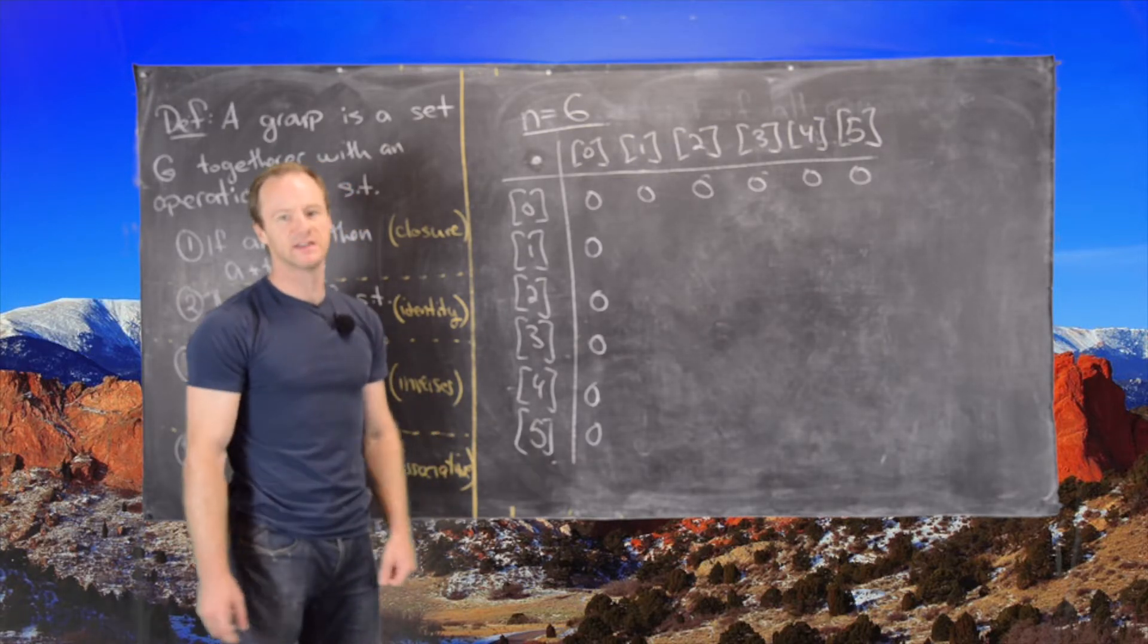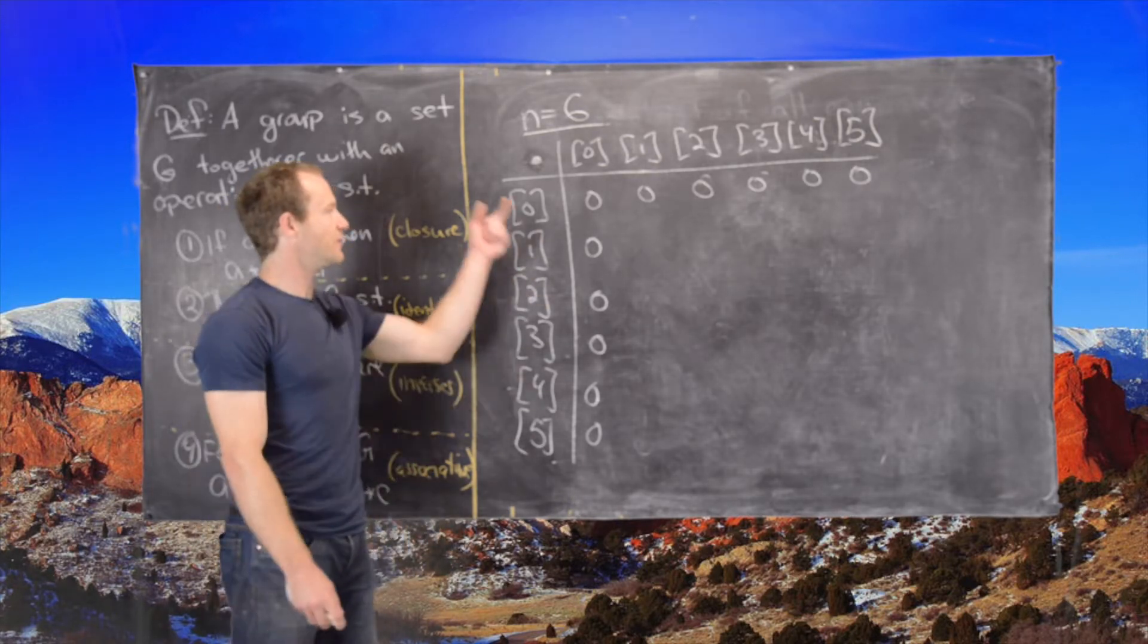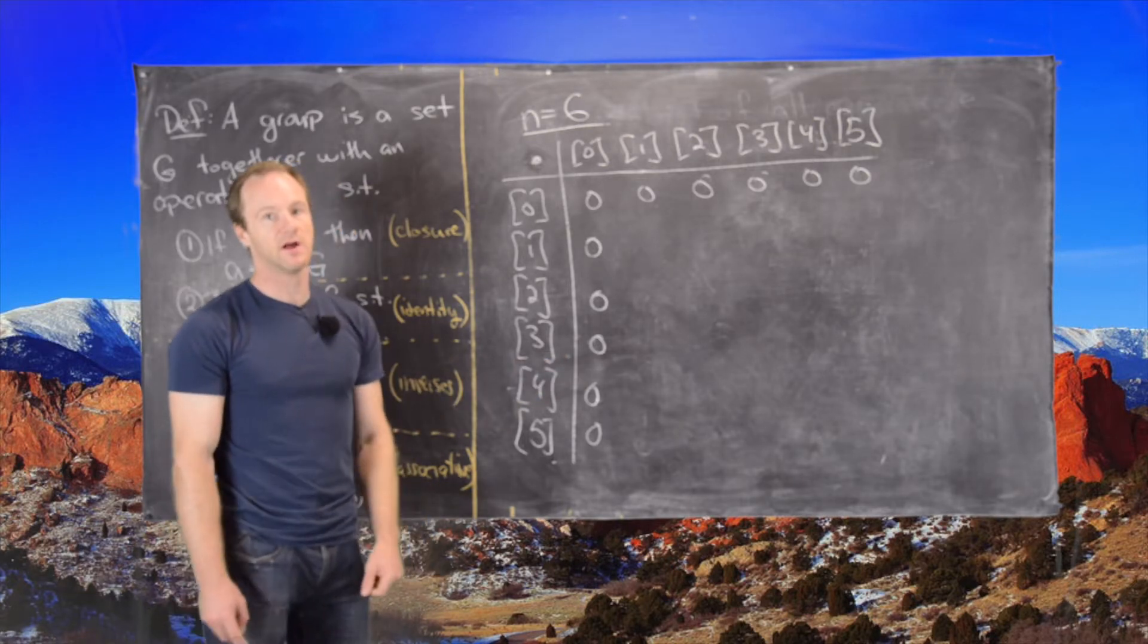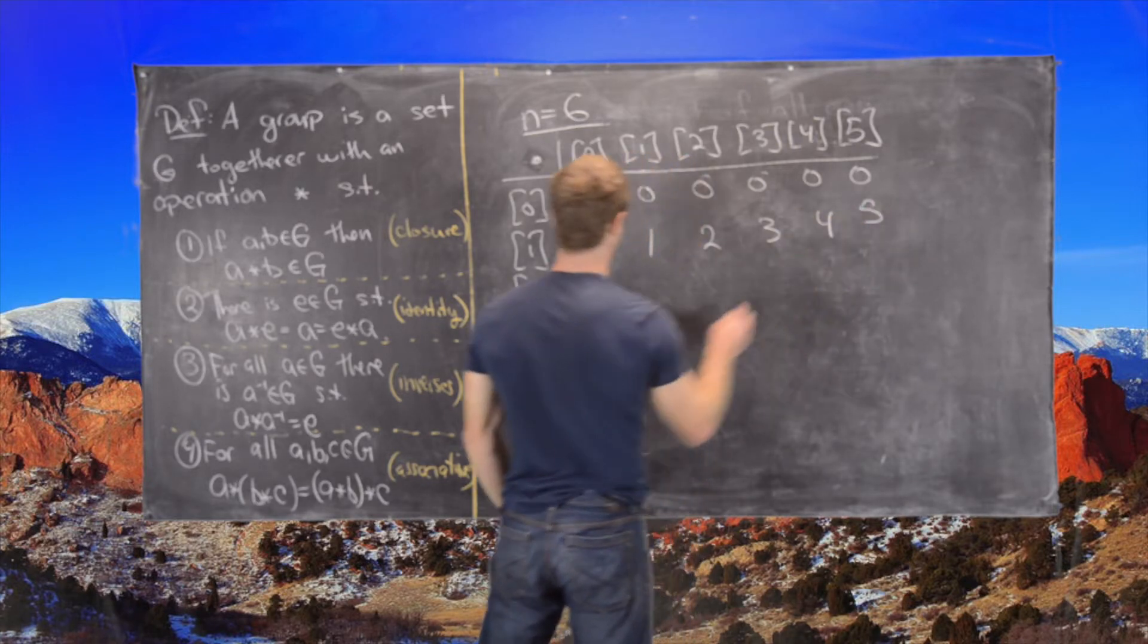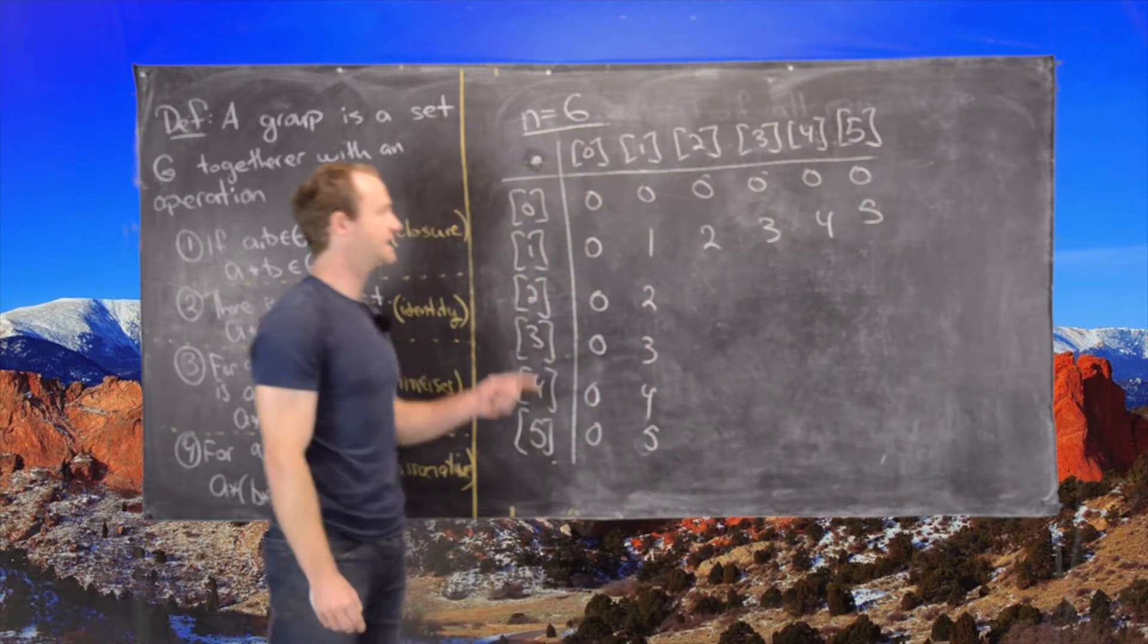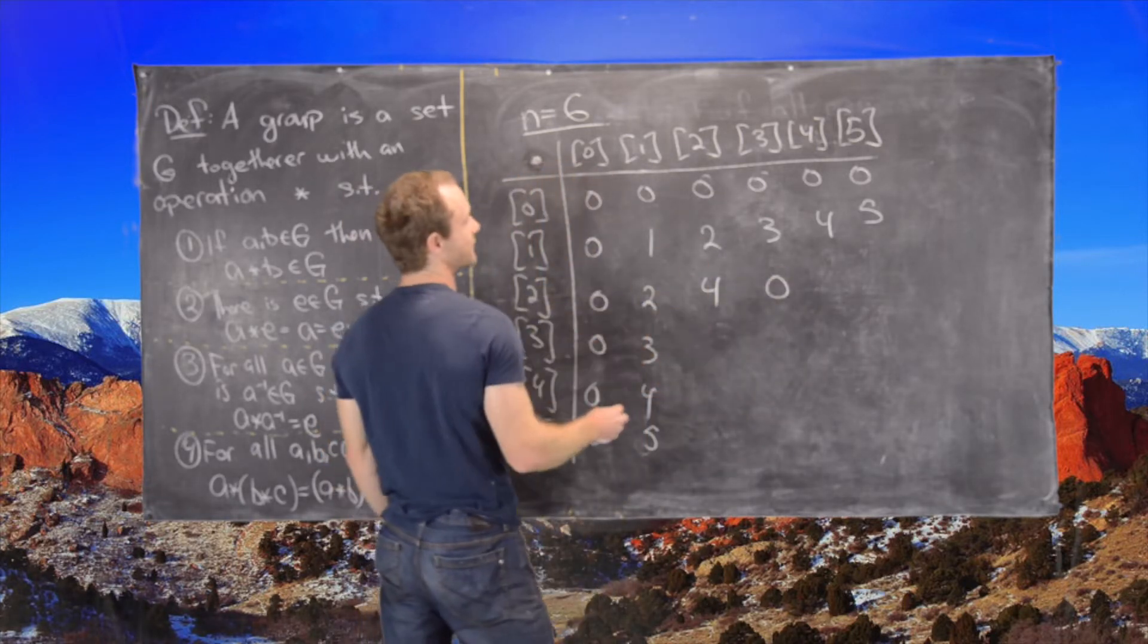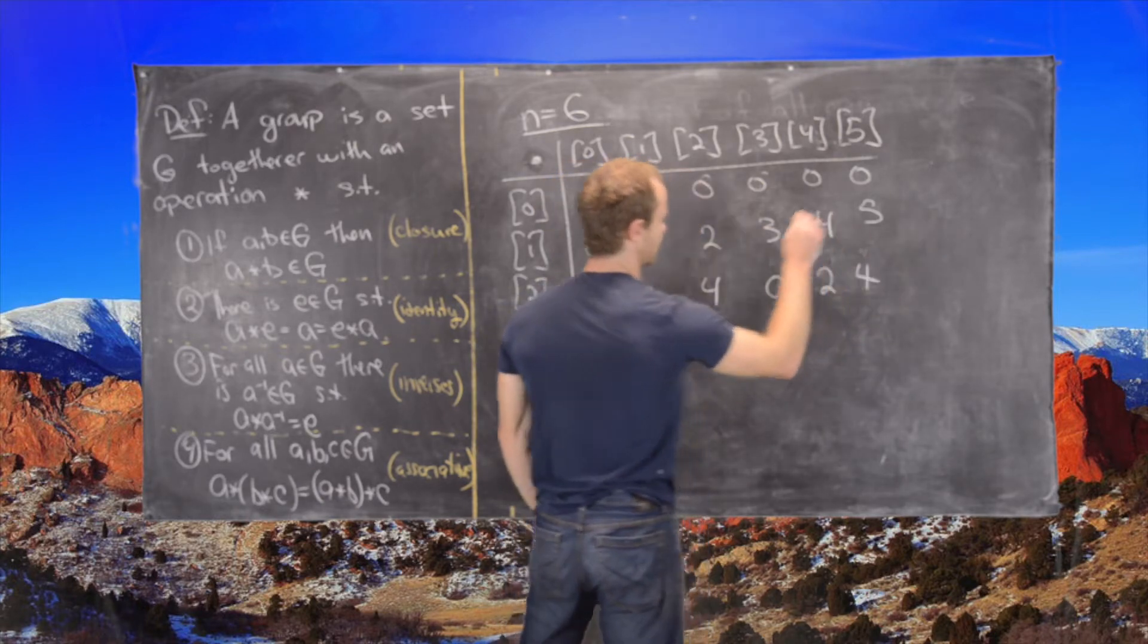Now maybe that's expected, but that means that we don't have a group already. Maybe we could just get rid of 0 and then we'd have a group, but again we'll cover that a bit later. So now let's look at 1. So we know 1 is the identity, so it'll be easy to figure out this row and column. So we have 1, 2, 3, 4, 5, 2, 3, 4, 5. Now let's multiply by 2. 2 times 2 is 4. 2 times 3 is 6, which is 0. 2 times 4 is 8, which is the same thing as 2. 2 times 5 is 10, which is the same thing as 4.